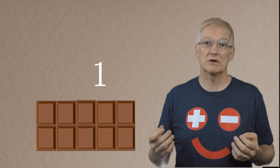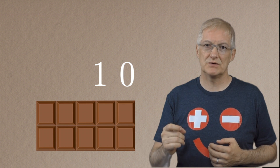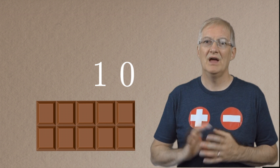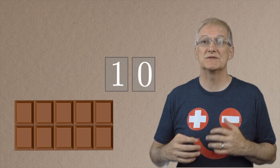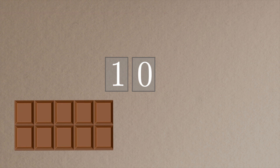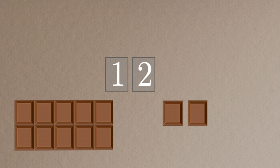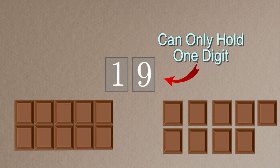So let's put our boxes back and see how these two number places can be used to count higher and higher numbers of chocolate. As I add more and more chocolate I can keep updating my digits in these number places to represent how many pieces I have. If I add another piece I've got 12, another piece 13, 14, 15, 16, 17, 18, 19. Now when I get to 19 that number place is full.